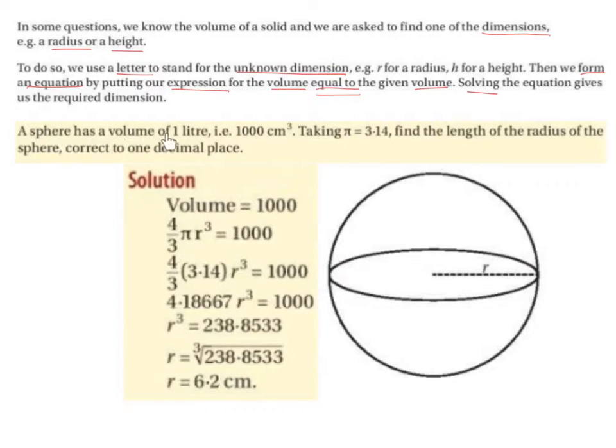A sphere has a volume of one liter, i.e. a thousand centimeters cubed. Taking π to be 3.14, find the length of the radius of the sphere correct to one decimal place.